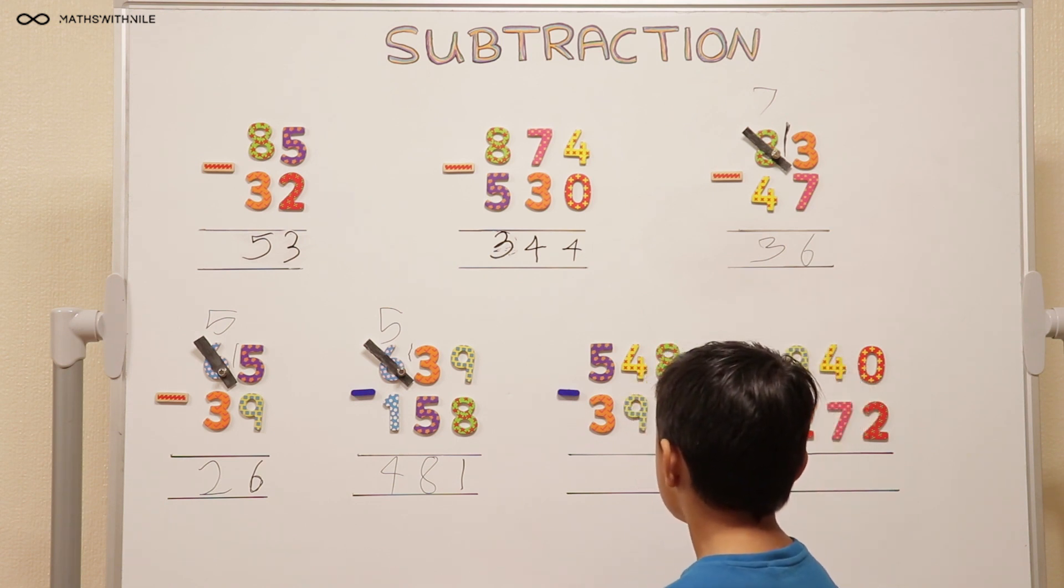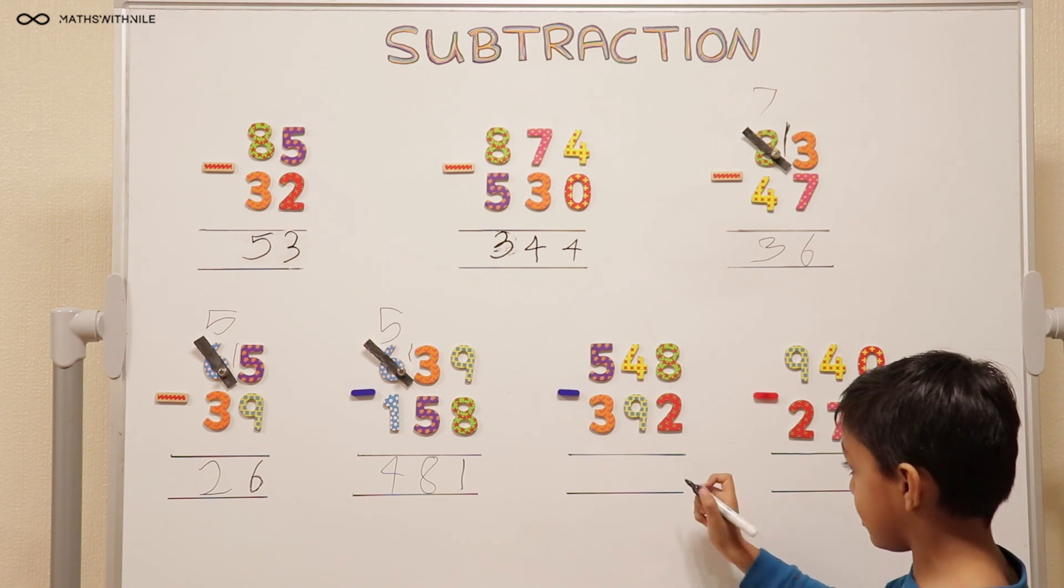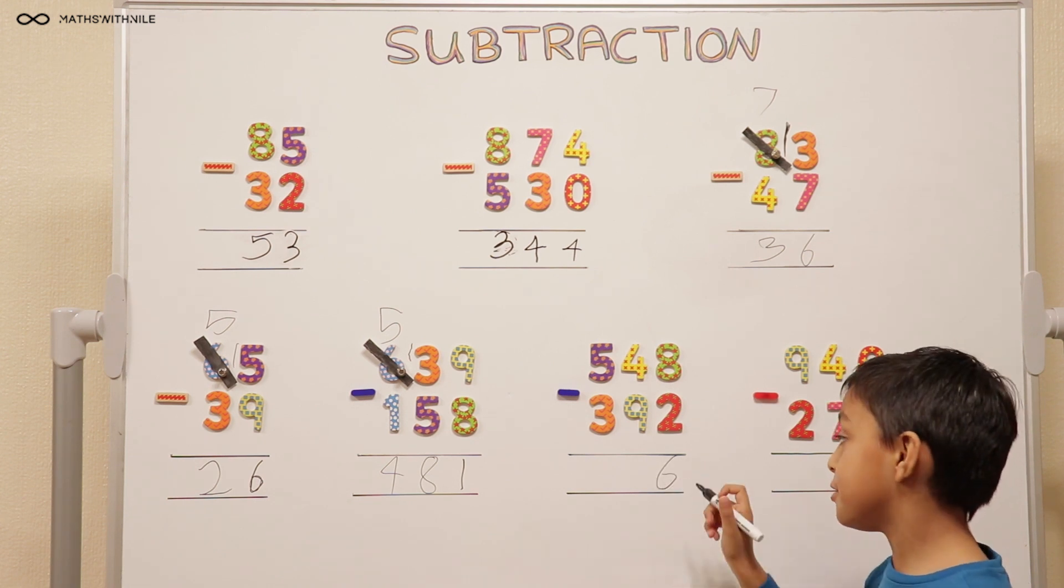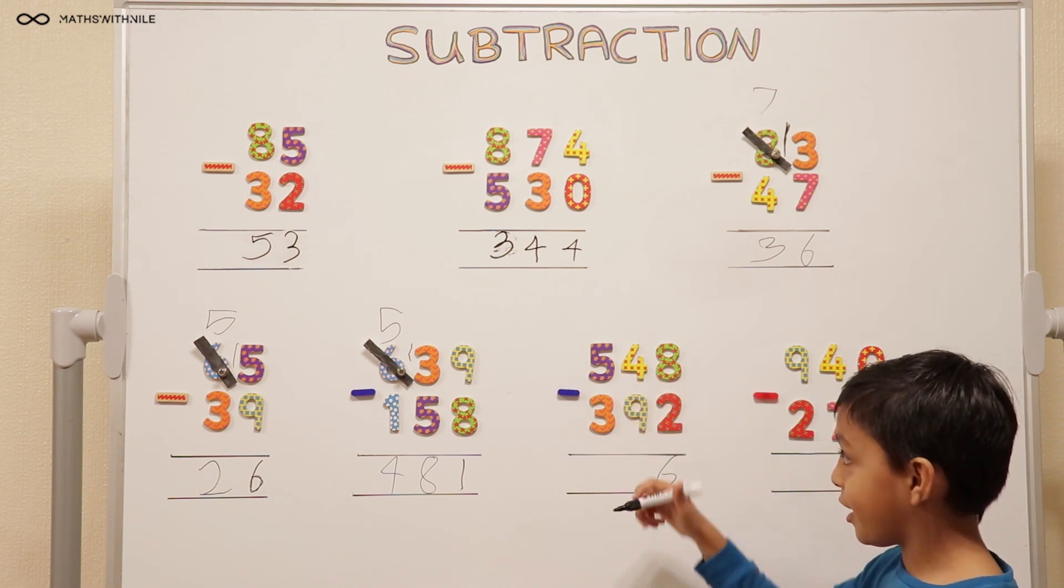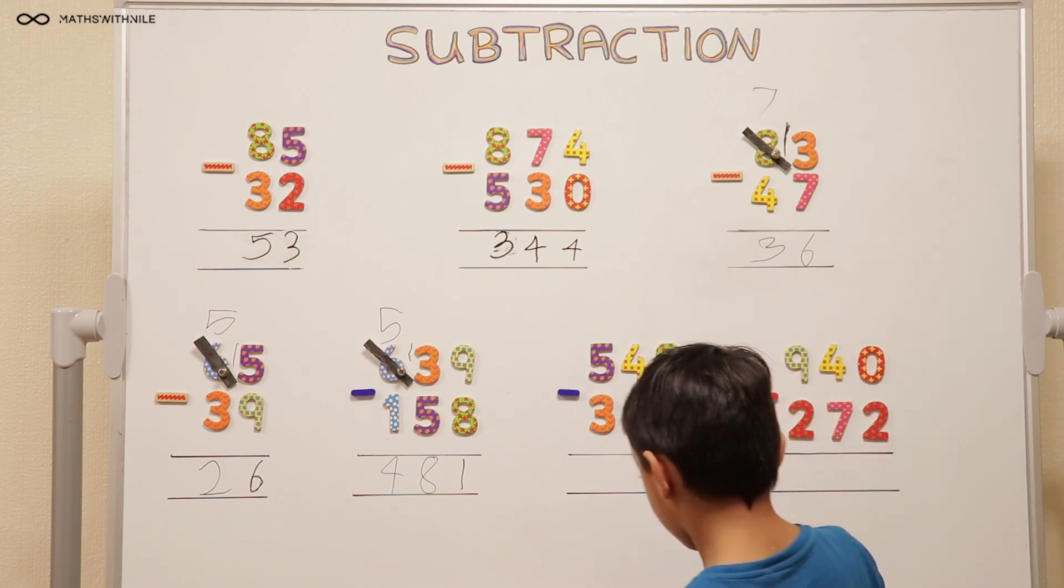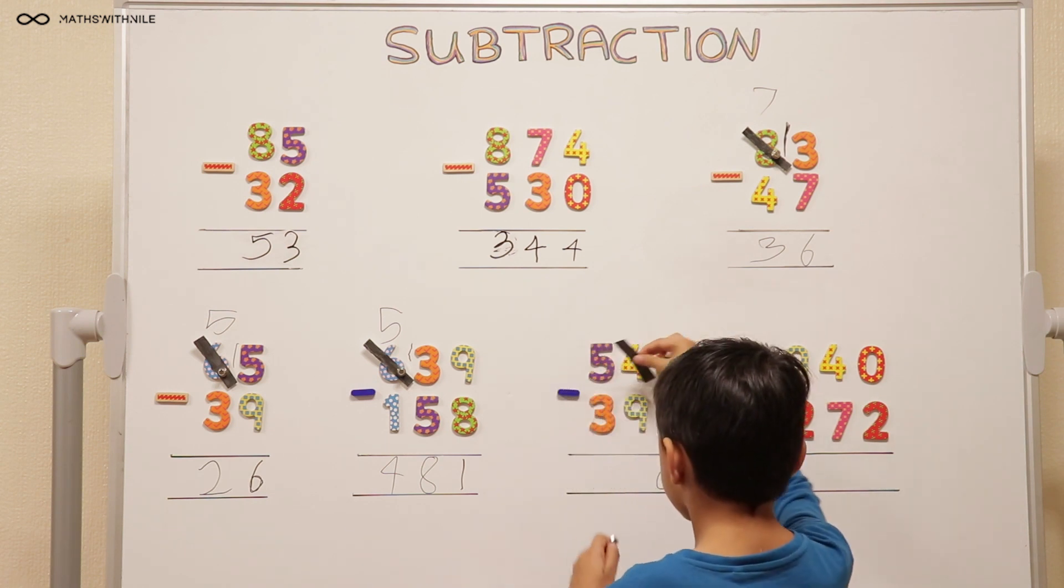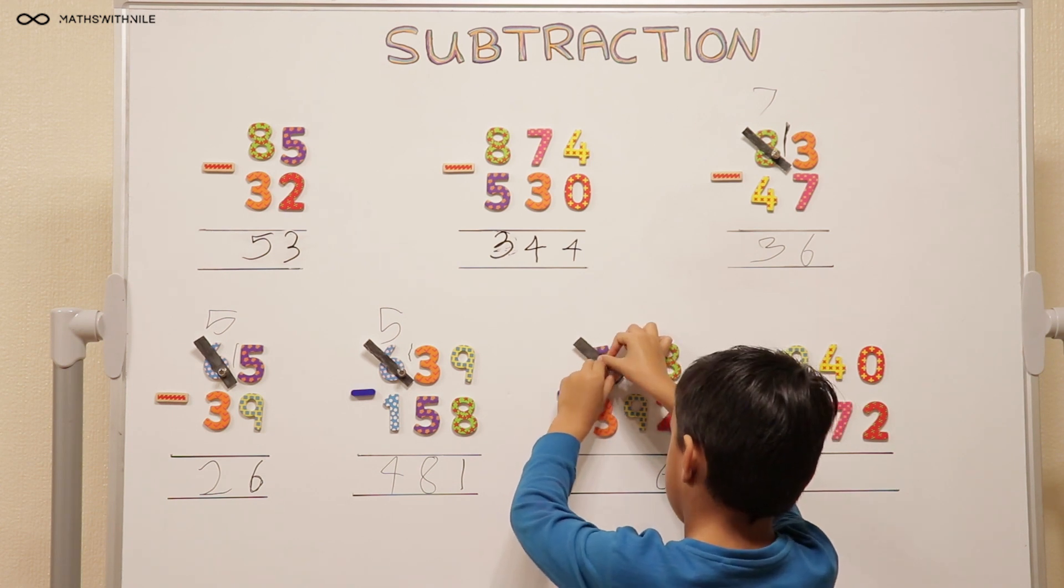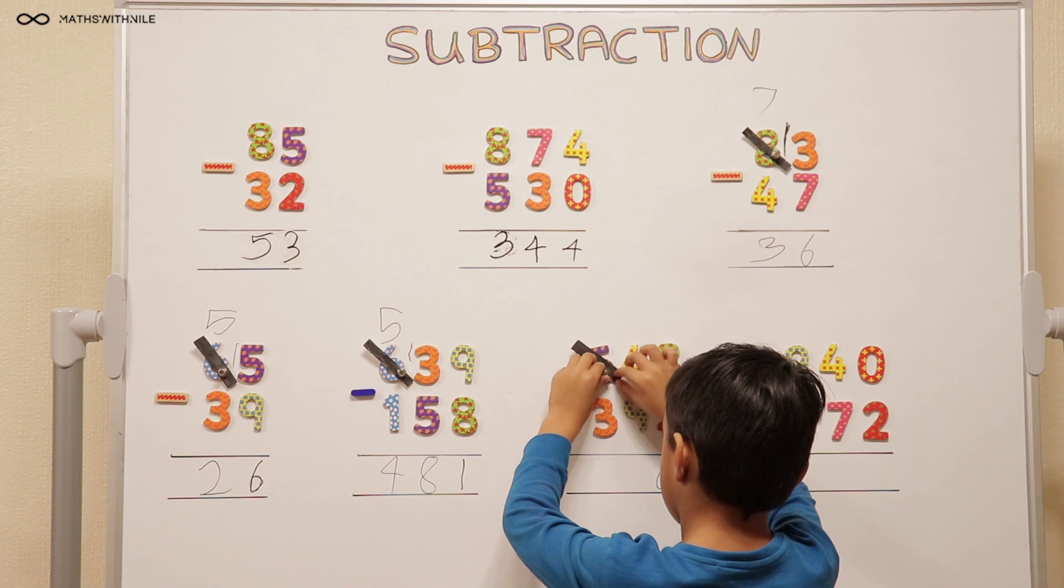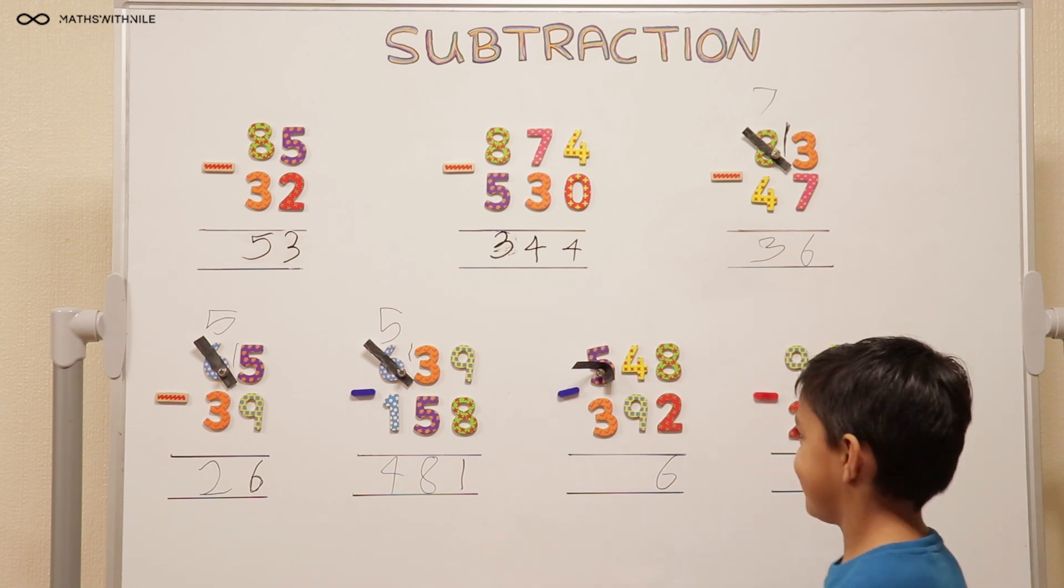548 take away 392. So 8 take away 2 equals 6. 4 take away 9 doesn't work. So explain to everyone what you're doing again. Stand to the side so we can see. I'll cross this out. When you cross the 5 out, how much have you left?